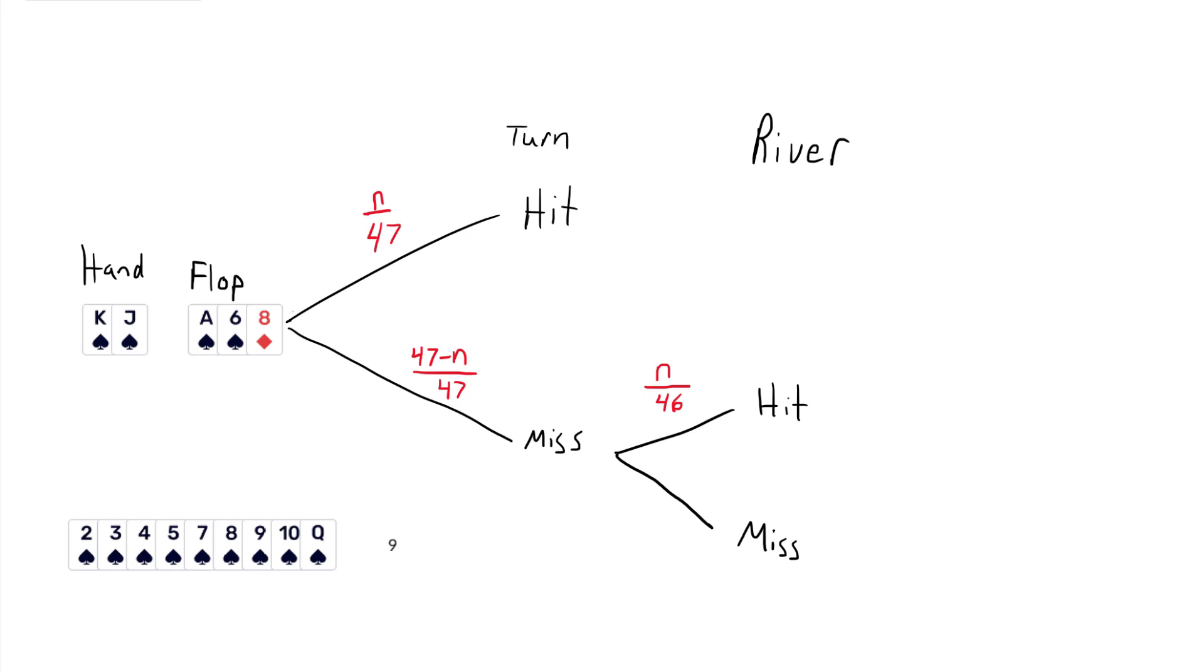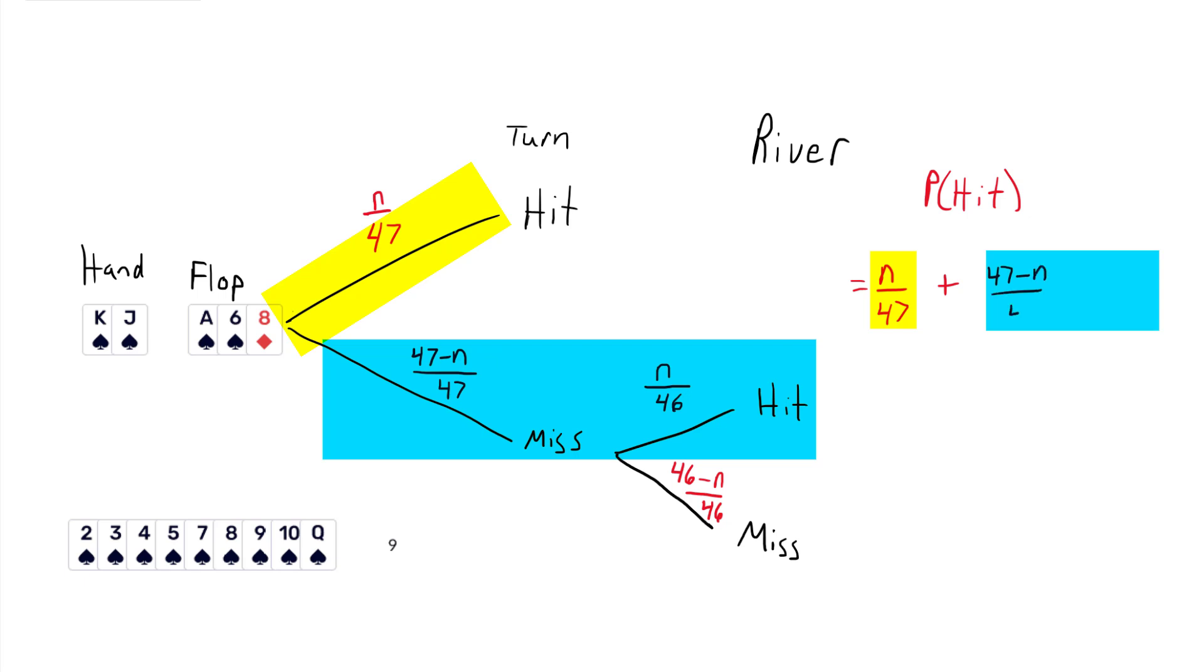Finally, what are the odds that you miss? Well, there's 46 cards left in the deck minus the nine good ones, so 46 minus N over 46. So what's the probability that you do hit your card? When you multiply the branches, it's either you hit it right away, so the probability that you hit is equal to the probability that you hit right away, the first branch, or that you hit on the river. So it'd be N over 47 plus, that's a plus and then times is a multiplication sign, 47 minus N over 47 times N over 46. That's the probability where N is the number of outs. Super important. In this case it's nine, but we want a general formula.